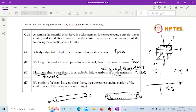Now we see the last option. If a portion of the beam has zero shear force, then the corresponding portion of the elastic curve of the beam is always straight. Here also this statement is false.